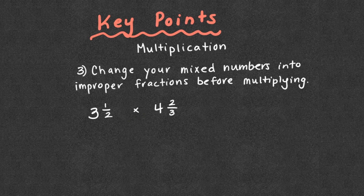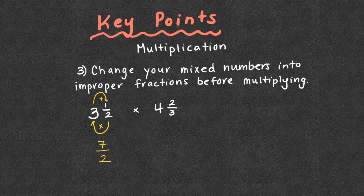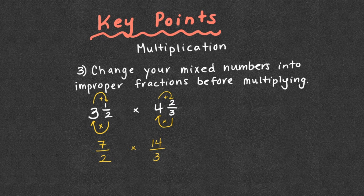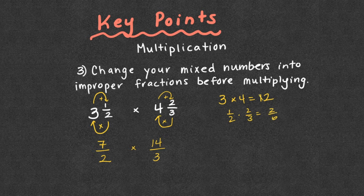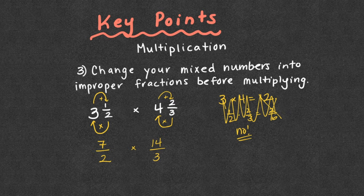Key point number three for multiplication: if we're going to multiply mixed numbers, change them into improper fractions before multiplying. For example, two times three is six, plus one is seven — so we'd have seven-halves — times three times four is 12, plus two is 14, giving us 14-thirds. We have to turn them into improper fractions before multiplying. Do not multiply the whole numbers and fractions separately — that is not correct. Be very careful.